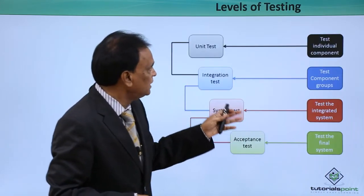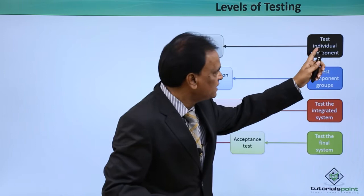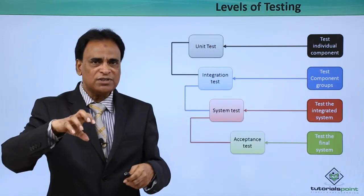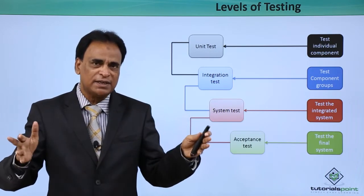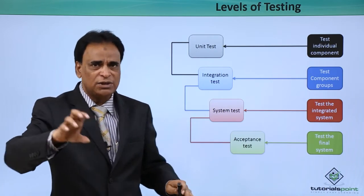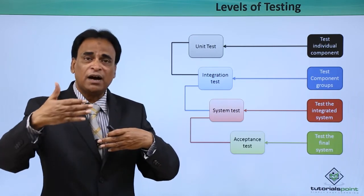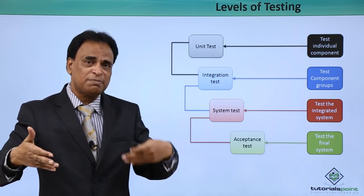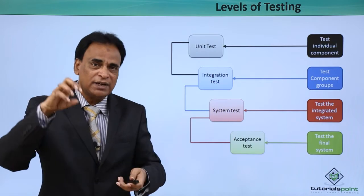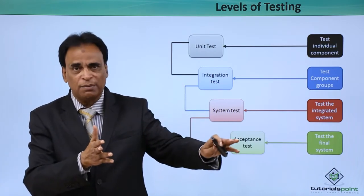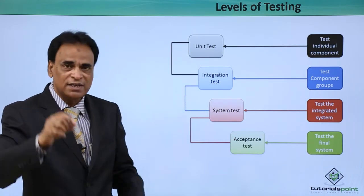Now, what are the levels of testing that need to be done? The first level is called the unit test, which is basically testing individual components. When you have a software, there are individual components to it and each component is designed and developed separately — it could be a user interface, functionality, or database. Within the functionality there could be different components: a registration page, an acceptance page, the back end. Each component is separately tested and that is called the unit test.